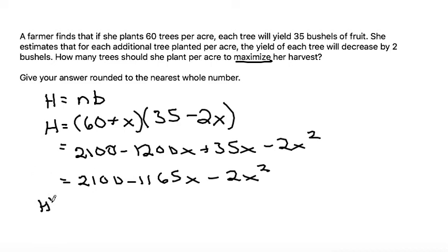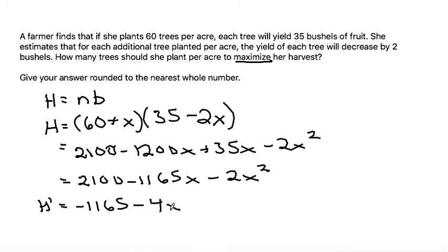Now let's take the derivative of that to maximize. The 2100 goes to 0, the negative 85x goes to negative 85, and then using the power rule, minus 4x. Let's set this equal to 0 and then solve.